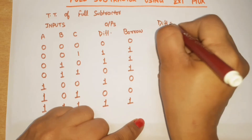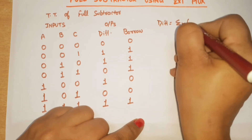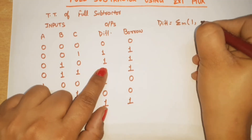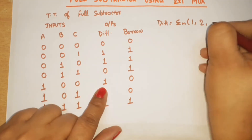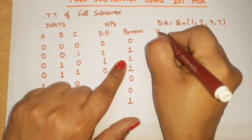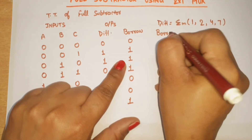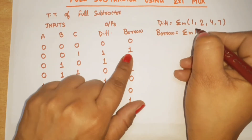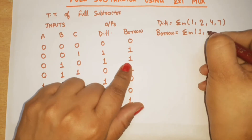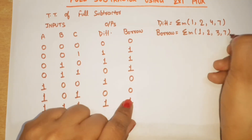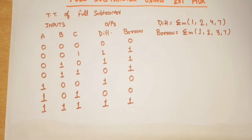Now we have the expressions. For difference: D is equal to summation of minterms 1, 2, 4, and 7. For borrow (B-out): borrow is equal to summation of minterms 1, 2, 3, and 7. This is the equation for difference and borrow.